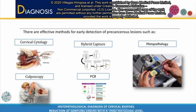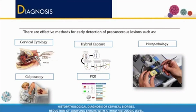Previous studies report that making a greater number of cuts at different levels in the paraffin block of the cervix biopsy can increase the sensitivity of the histopathological study. That is why the objective of our research is to determine the variation of the histopathological diagnosis by examining three levels in the biopsy paraffin block of the different degrees of CIN, HPV, and cervical cancer.